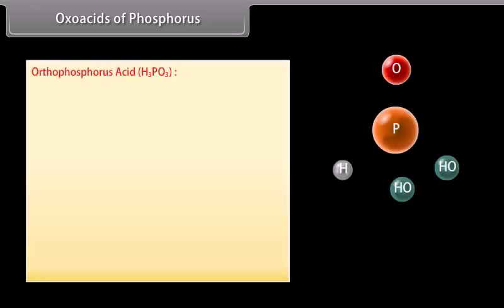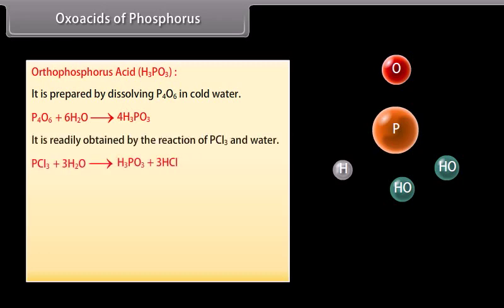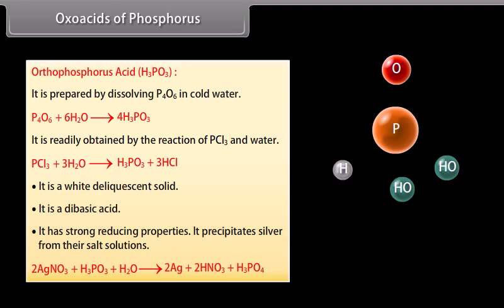Phosphorus forms a number of oxoacids. Orthophosphorous acid (H3PO3) is prepared by dissolving P4O6 in cold water or by the reaction of PCl3 with water. It is a white deliquescent solid and a dibasic acid. It has strong reducing properties and precipitates silver from silver salt solutions.